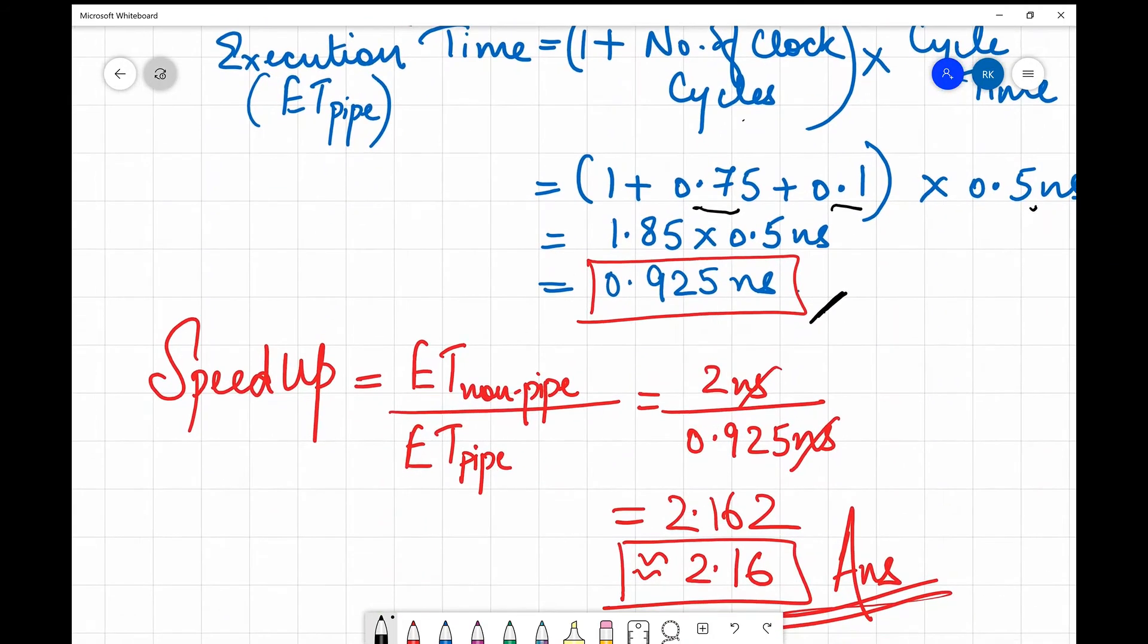Now finally the speedup. The formula for speedup is very simple: it is execution time in case of a non-pipeline scenario upon execution time in case of pipeline scenario, which is 2 nanoseconds upon 0.925 nanoseconds which comes out to be 2.162. When you round off to two decimal places it is 2.16 which is your final answer for this numerical.